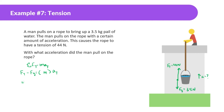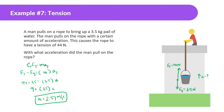Force of tension is 44, force of gravity is 35, mass is 3.5. So 44 minus 35 equals 9, and 9 divided by 3.5 gives us 2.57 meters per second squared.